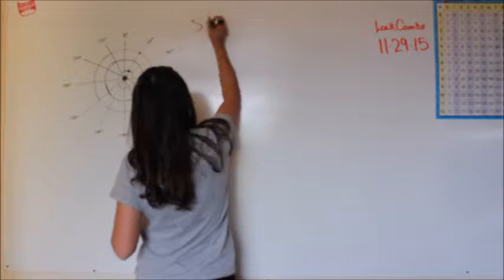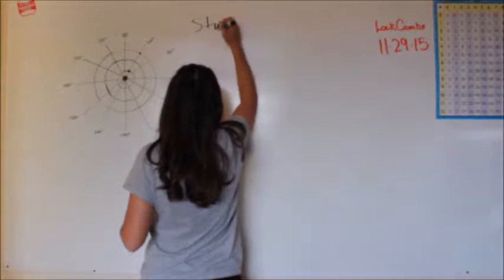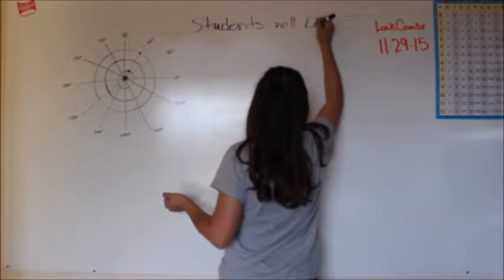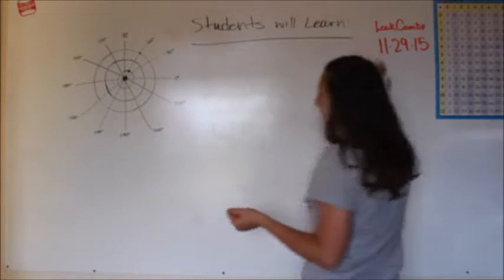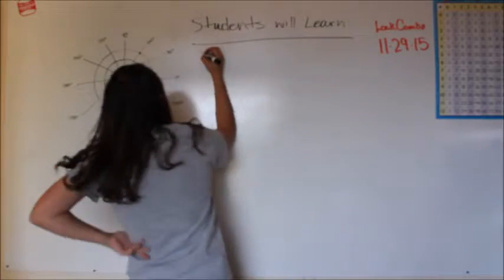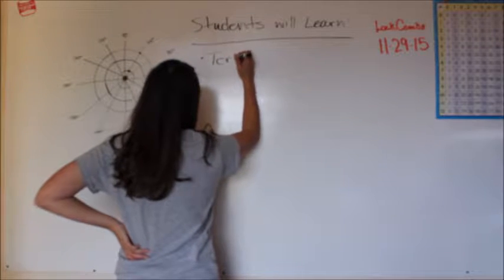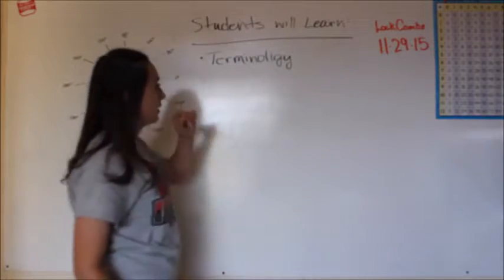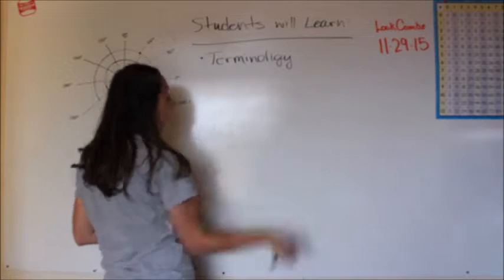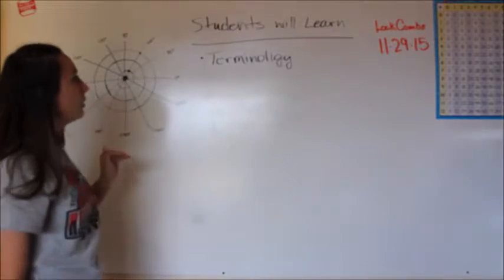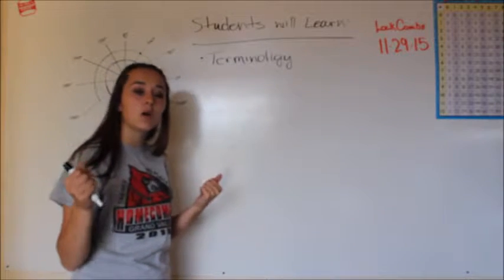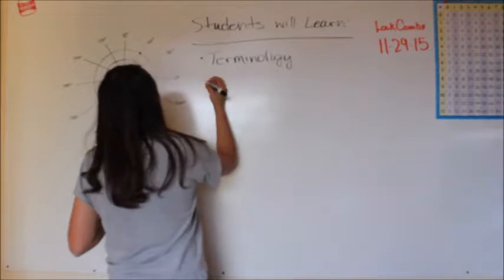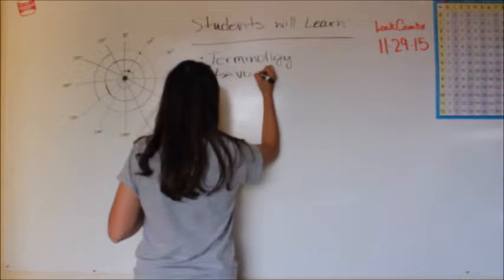So students are going to learn how to do a bunch of different things. But mainly what we're going to learn is terminology for what the different aspects and parts are that we need to know, the vocab that we need to know for being able to understand the different parts of polar coordinates. So this is going to include vocab.